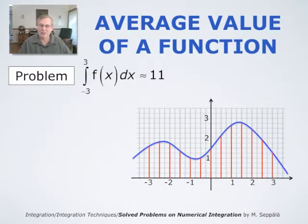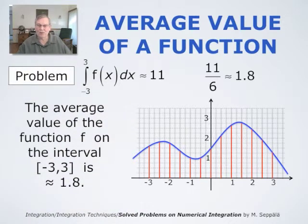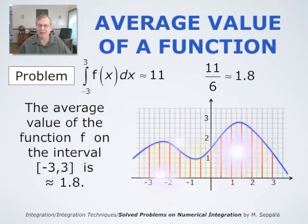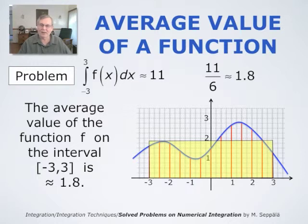And this leads us also to the concept of the average value of a function. The average value of the function is the height of this rectangle, whose area is the same as the area of the domain below the graph of this function, in the case of functions that take positive values. So in this case, the average value is 11 divided by 6, approximately 1.8. It is the height of this yellow rectangle, whose area is the same as the area of the domain under the graph of f, and over this corresponding interval.